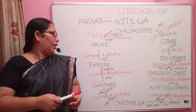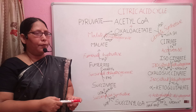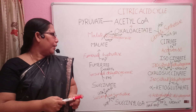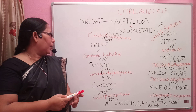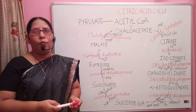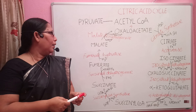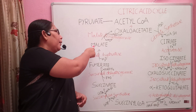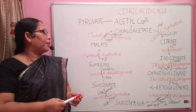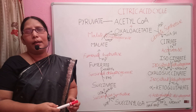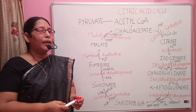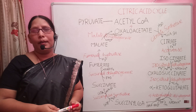From fumarate, malate is produced in the presence of fumarate hydratase, involving the addition of a water molecule. From malate, oxaloacetate is formed in the presence of malate dehydrogenase, with a reduction of NAD+ to NADH. The cycle then repeats again.